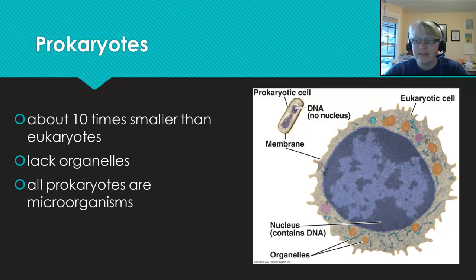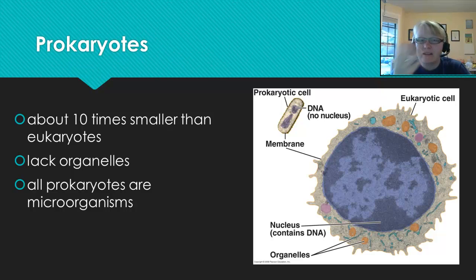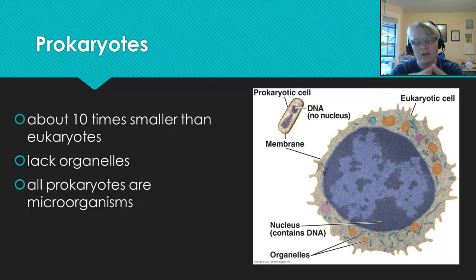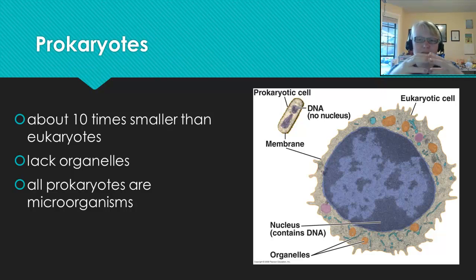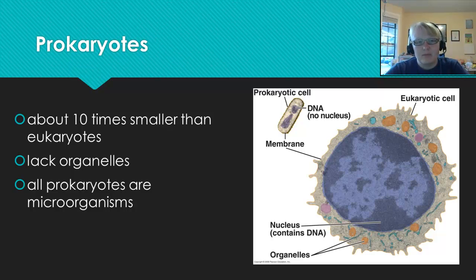Here are our prokaryotes. As you can see on the slide, prokaryotes are much smaller than eukaryotes and lack organelles. Remember, prokaryotes are all single-celled organisms and are much older cells. However, don't think they contain nothing just because they don't have a nucleus — they do still have DNA, ribosomes, and cytoplasm. Those are really the three most basic components that all cells must have.